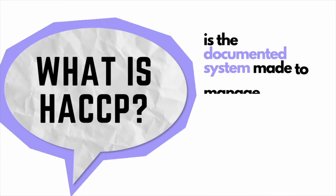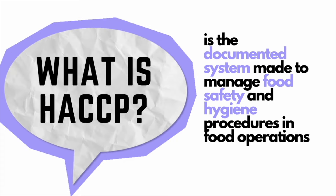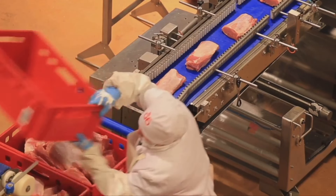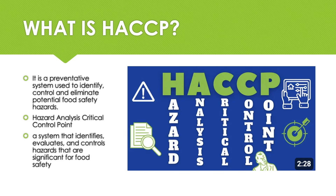What is HACCP? Hazard Analysis and Critical Control Point, or HACCP, is a globally accepted method for lowering the possibility of food safety risks. It is a progressive method of identifying hazards in food production and putting control measures in place to prevent, eliminate or reduce these hazards to an acceptable level. It is a systematic preventative approach for food safety from biological, chemical, physical and allergenic hazards in production processes, from raw material, production, procurement and handling to manufacturing, distribution and consumption of the finished product.